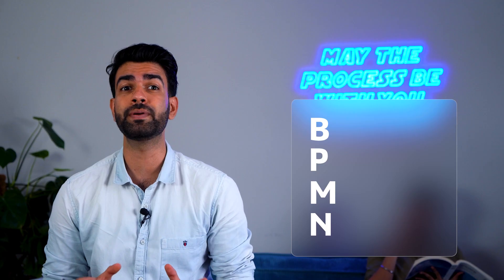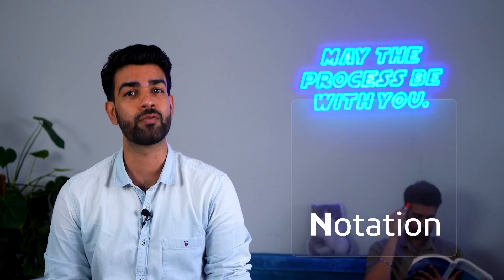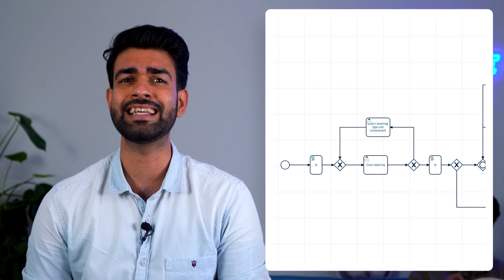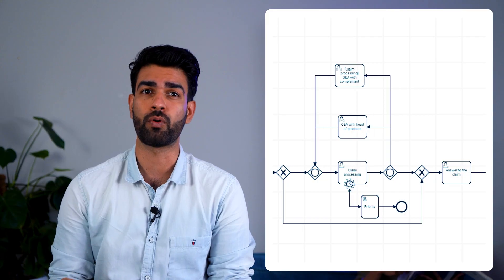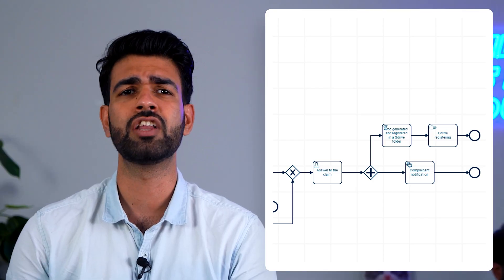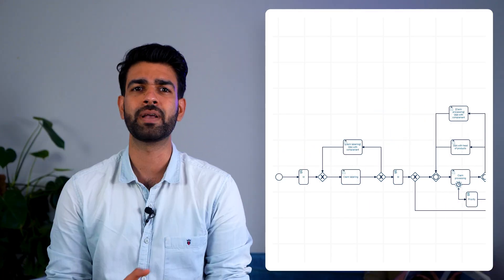To give you a bit of context, BPMN, or Business Process Model and Notation, came out in 2004. It's a visual language that makes business processes easy to understand for people and for machines. It is a toolbox that allows you to translate your business processes into a universal and easily understandable notation based on simple shapes and arrows. So it's like a universal translator for businesses.